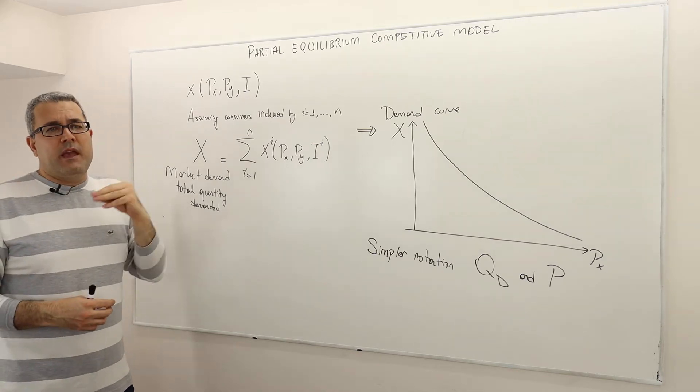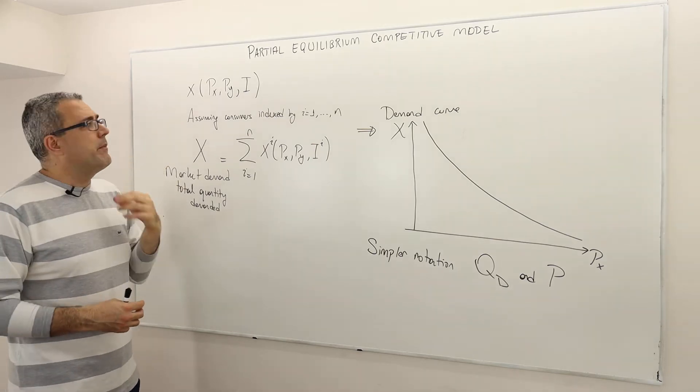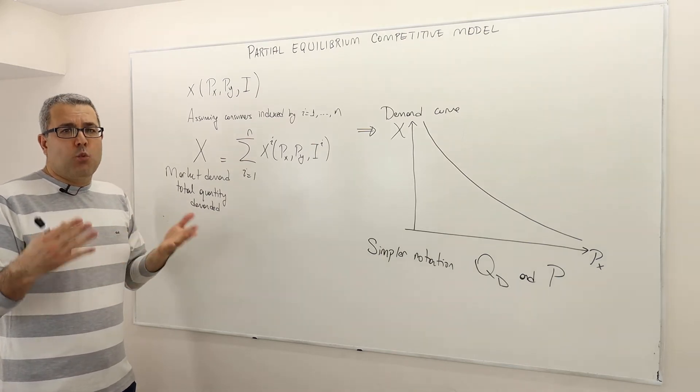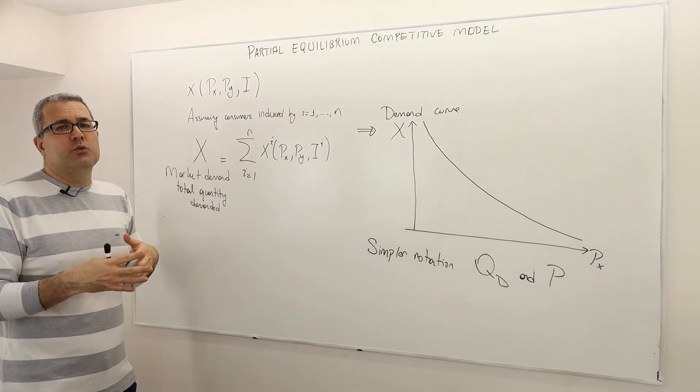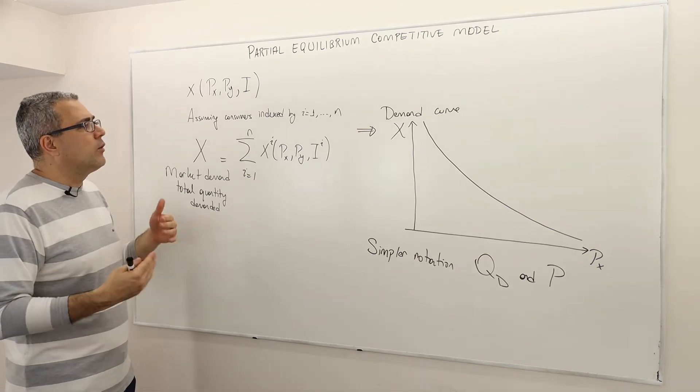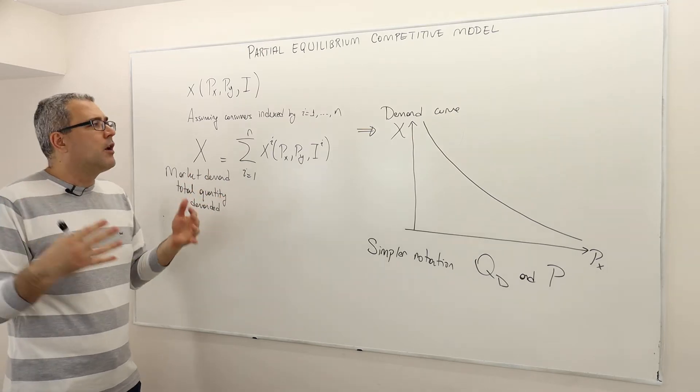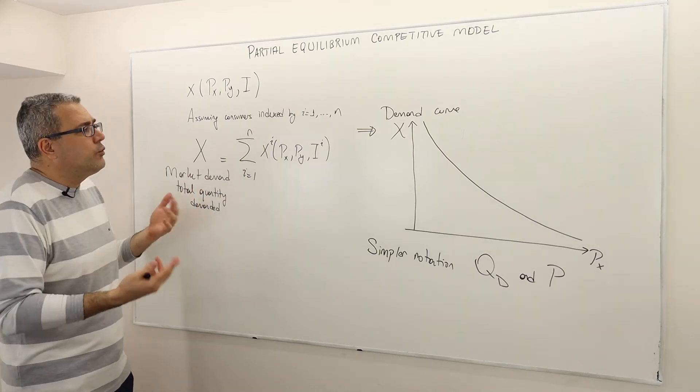This is an individual demand curve or individual demand. In a market environment, we have not just one consumer, one individual, but many individuals or buyers. What do we do in this case? We look at the aggregate, the sum of all the demands.